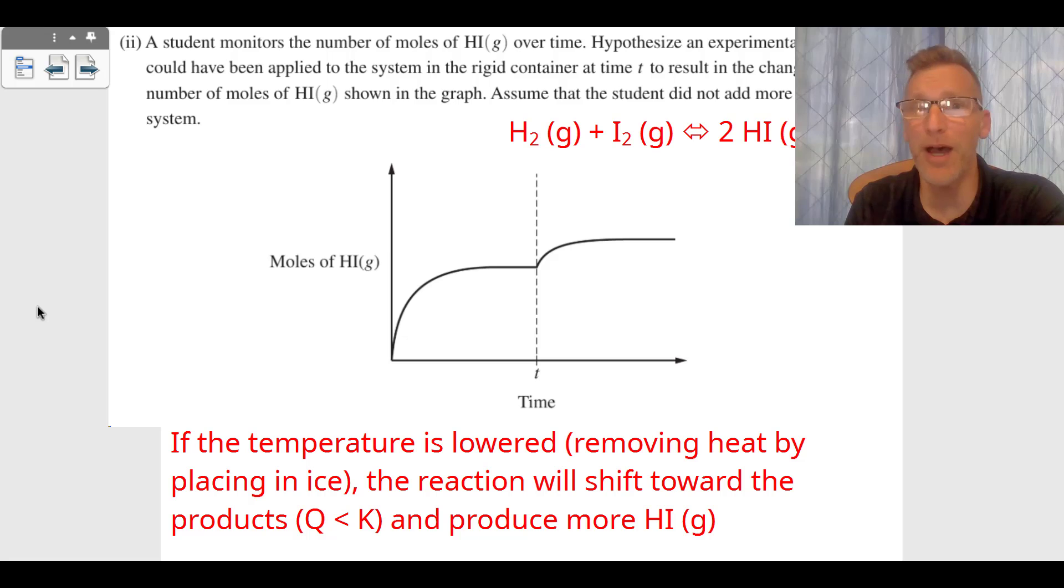Now, B2 says a student monitors the number of moles of HI, and it says hypothesize an experimental change that could be applied, we're talking with Le Chatelier's principle, to the system to result in more moles of HI. You can see it came to equilibrium, and then you can see the moles of HI went up. So there's a couple different ways to make the HI go up. We could add H2, we could add I2, or we could reduce the HI, and they did not want us adding any more HI gas to the system.